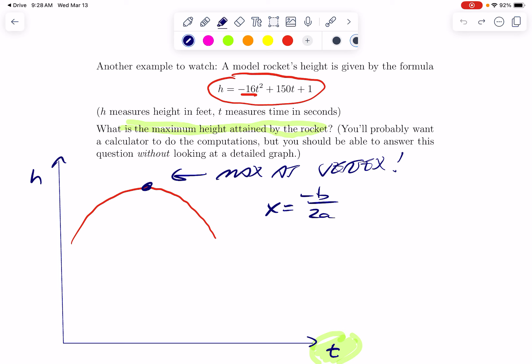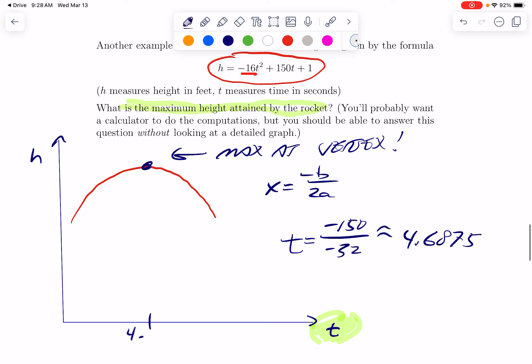And I will get an approximate value on a calculator. So 150 divided by 32, just do that because the negatives cancel. And this works out to 4.6875. That's what we're learning right now. That's basically the time at which it gets to its maximum.